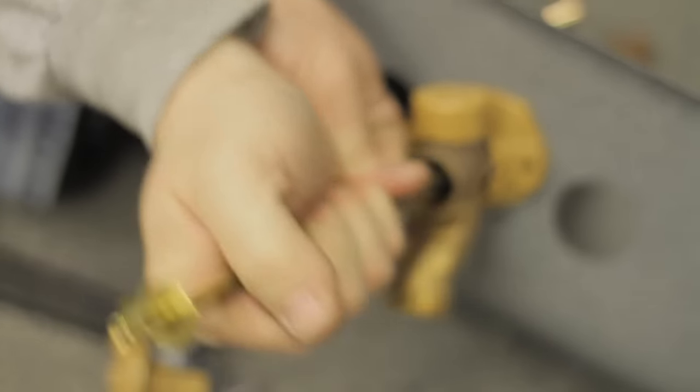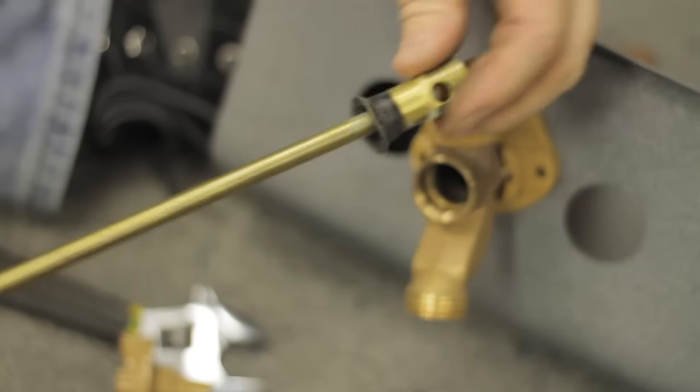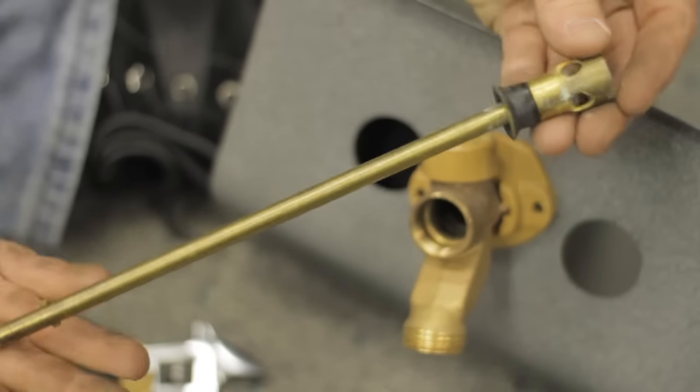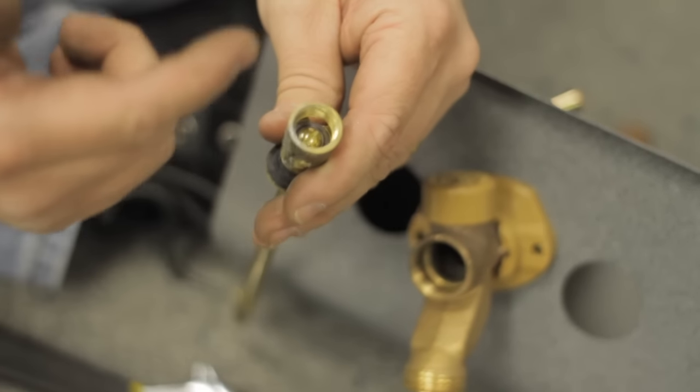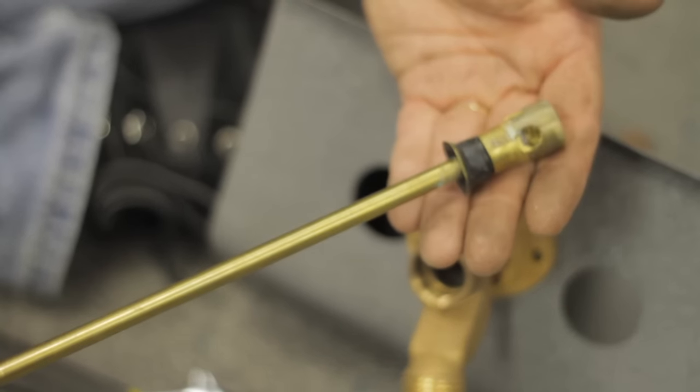Some of them can be a little tricky, need a little bit of force to get them out. Now you're ready to either replace the stem itself or at least the washers, O-rings, take it down, match it up.